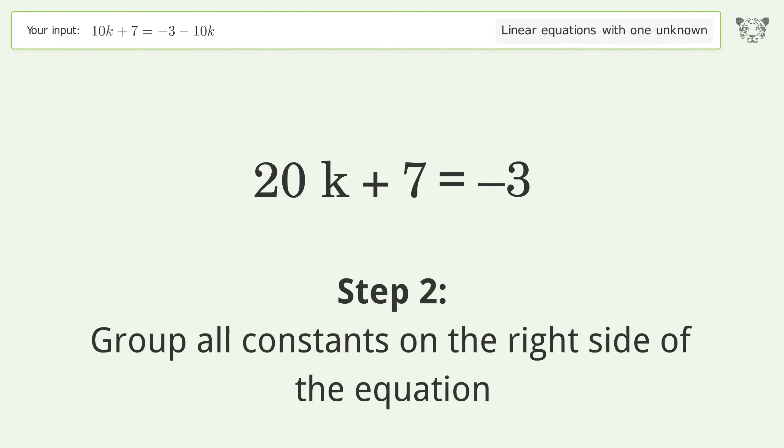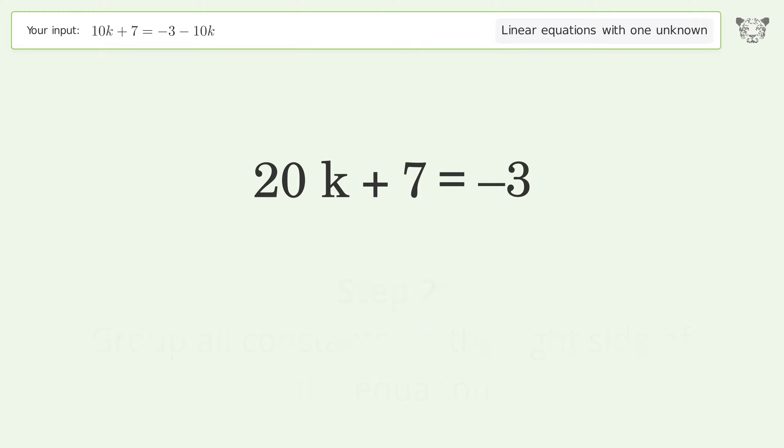Group all constants on the right side of the equation. Subtract 7 from both sides and simplify the arithmetic.